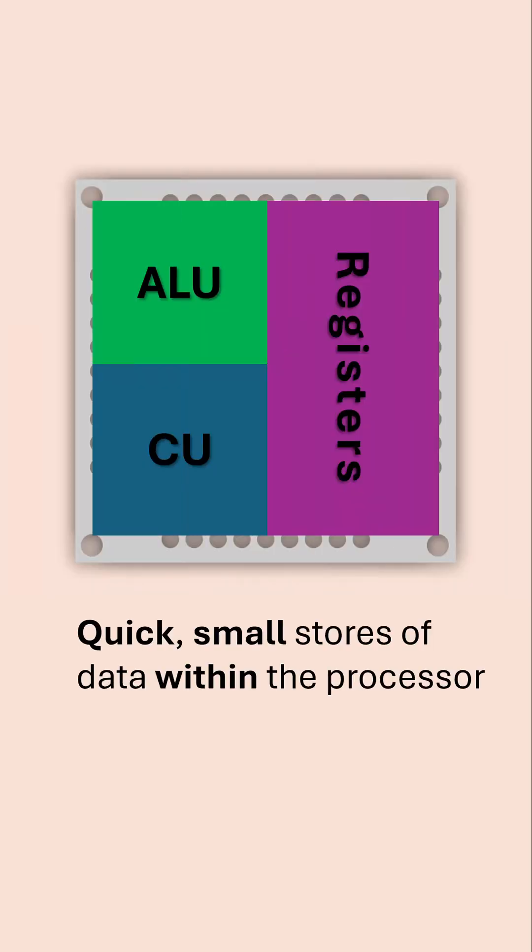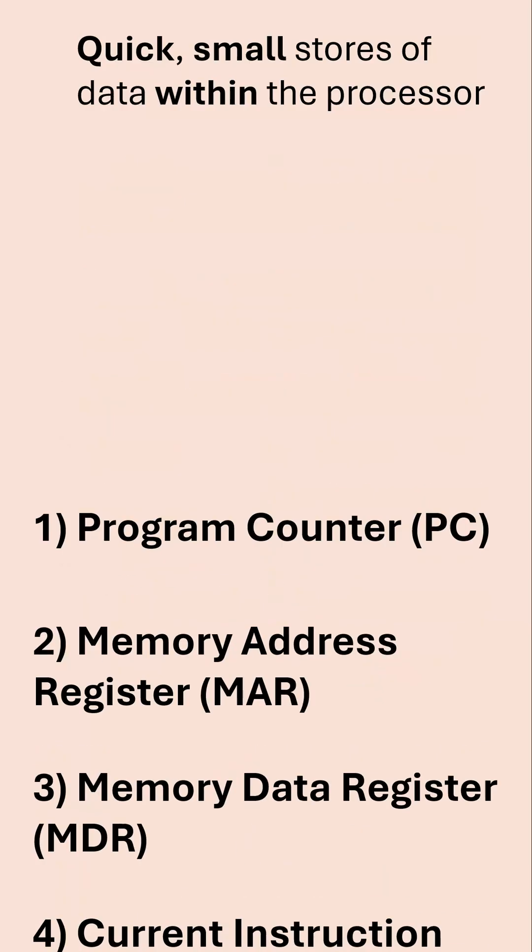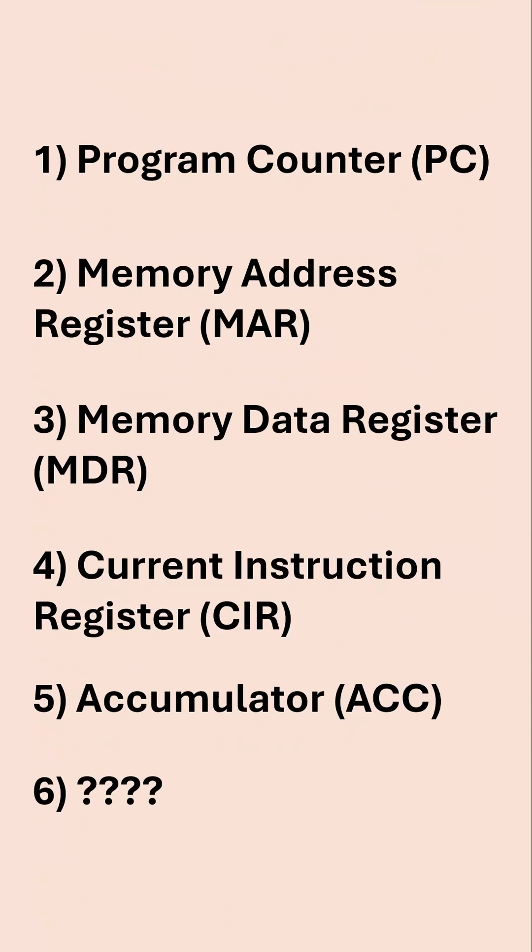Registers are one of the key components of processors. They are the quickest and smallest stores of data we have in a computer and they're held within the processor itself. The processor has many different registers, including six you need to know about, and the sixth one is often forgotten about, so let's see if you know it.